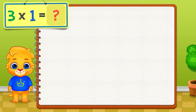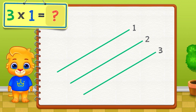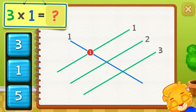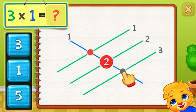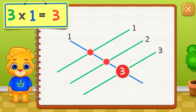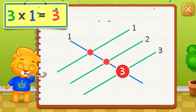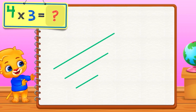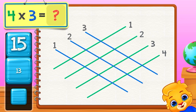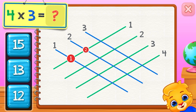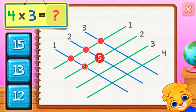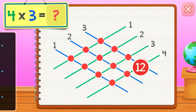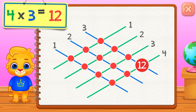Let's learn to multiply using the stick method. 3 times 1 equals — touch intersection points: 1, 2, 3. 3 times 1 equals 3. 4 times 3 equals — 1, 2, 3, 4, 5, 6, 7, 8, 9, 10, 11, 12. 4 times 3 equals 12.